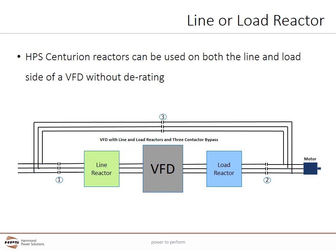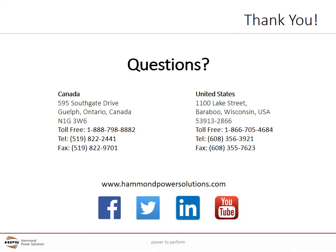Some manufacturers have separate reactors which are used on either the line or load side of the VFD but can't be interchanged. HPS makes it easy in selecting either a line or load reactor. The Centurion reactors can be used in both the line and load side of a VFD without any derating. Thank you for completing this presentation and we hope that you have found it informative.